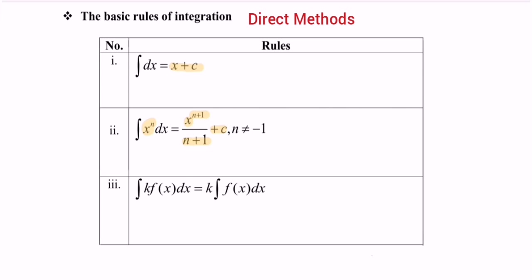Rule number three: integrate k multiplied with the function f(x) with respect to x, and we will obtain k times the integral of f(x) with respect to x.